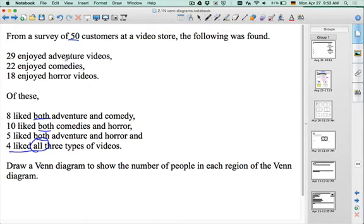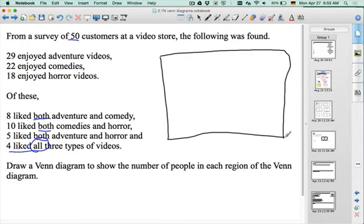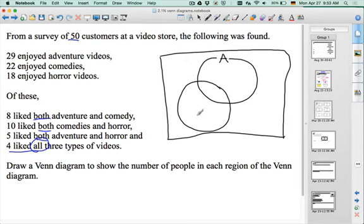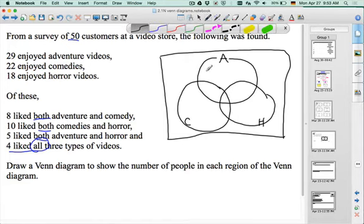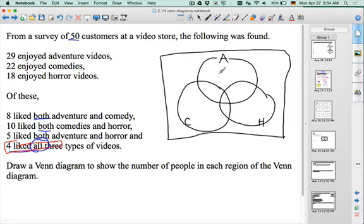I'm going to pass this over to Mr. Song. What's the easiest part to start and how many circles do we need? There are three categories, the genres of videos. So, I'm going to make a universal set, a big box here, and three circles. One for adventure, one for comedy, and third for horror. Mr. Kerbis mentioned earlier, when we have overlaps he likes to start in the middle, and I do the same. So, I would work backwards and start from 4 liked all three types. I'm going to put a 4 in the middle there.